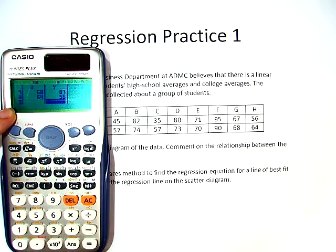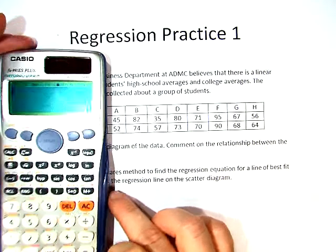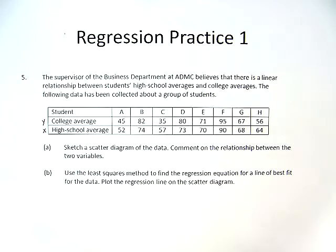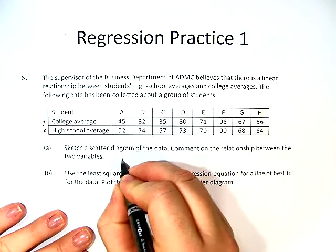You have to go back to your main screen before doing any calculations. So we hit AC. Earlier we sketched this problem and we found that this was a positive linear relationship.